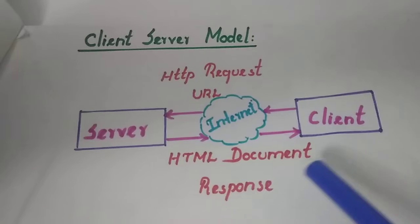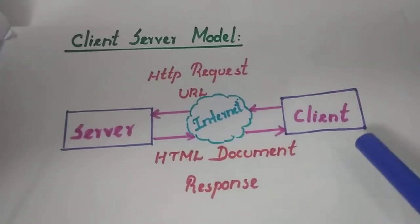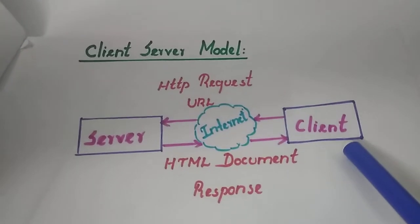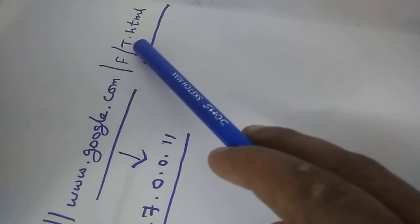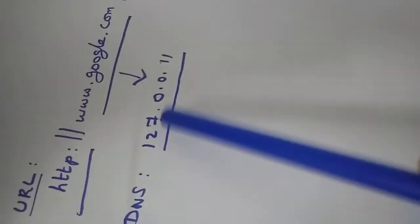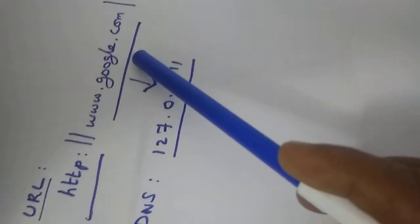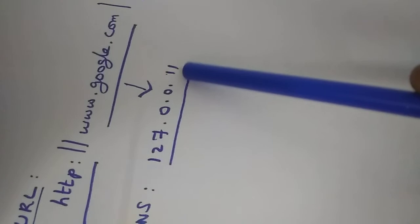Now we will see how the client and server interact with each other. First, an end user will enter a URL in the client system. For example, the user enters a URL as http://www.google.com followed by a folder name and a file name with a .html extension. URL stands for Uniform Resource Locator — it is the location of a resource on the server. The web browser gives the request to the DNS server to convert this domain name into a numerical IP address. The domain name www.google.com is converted into an IP address, for example 127.0.0.11, which is a 32-bit binary number.